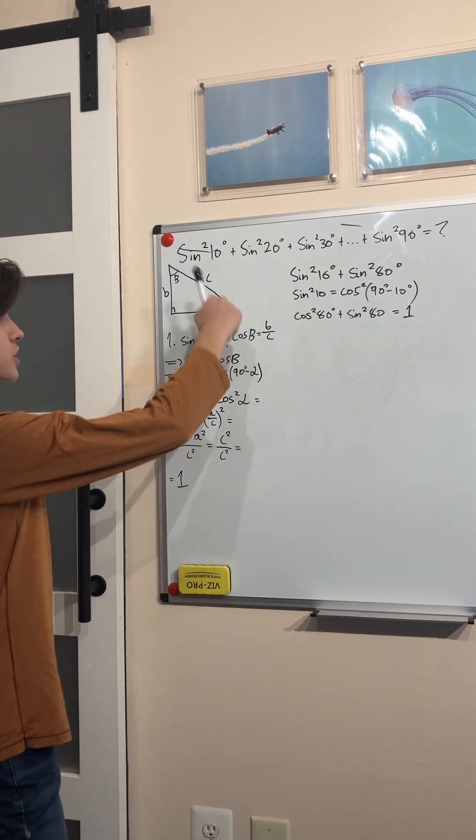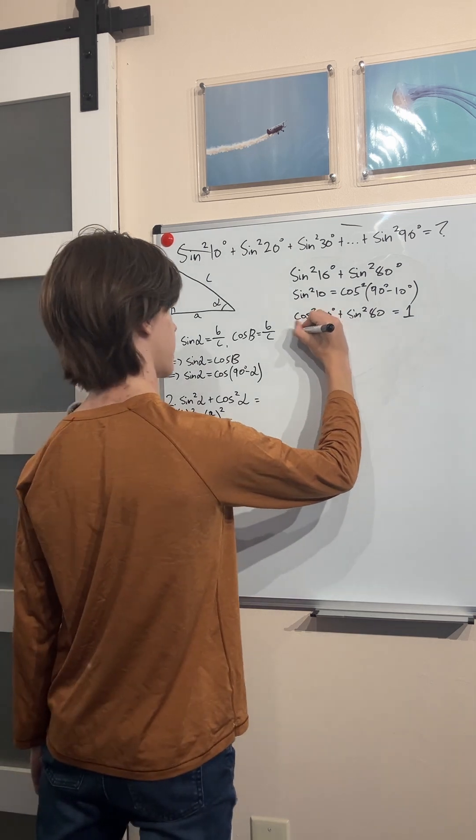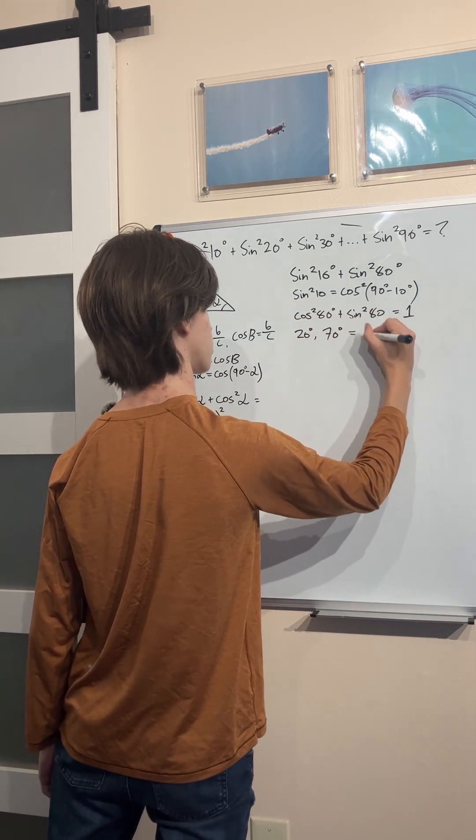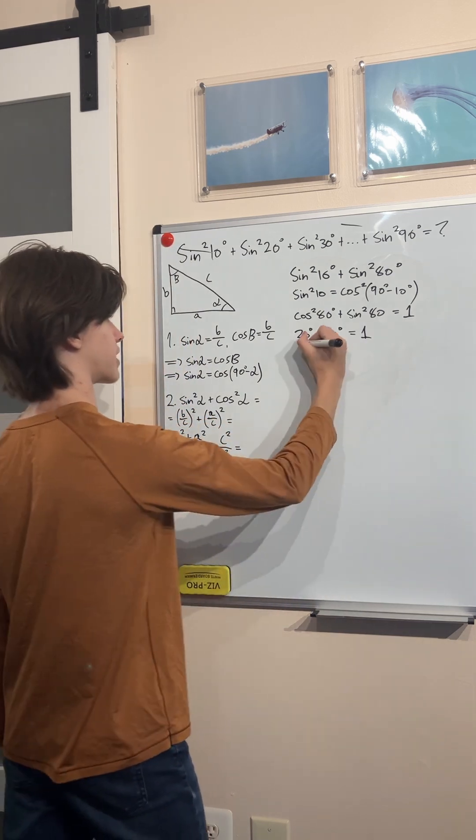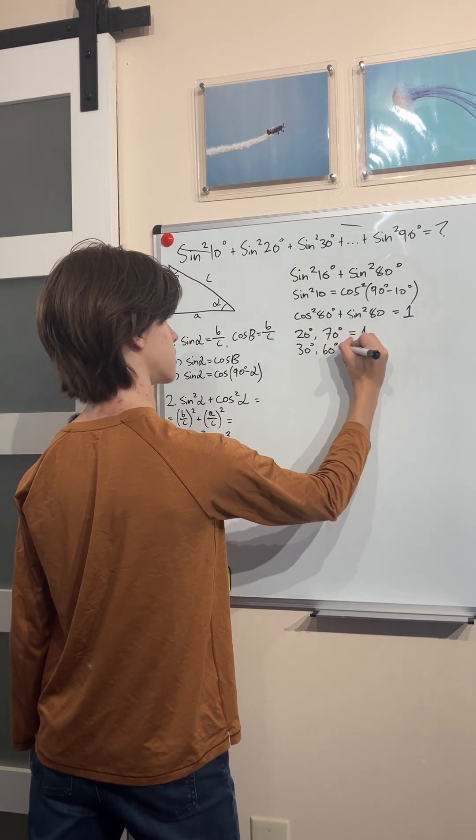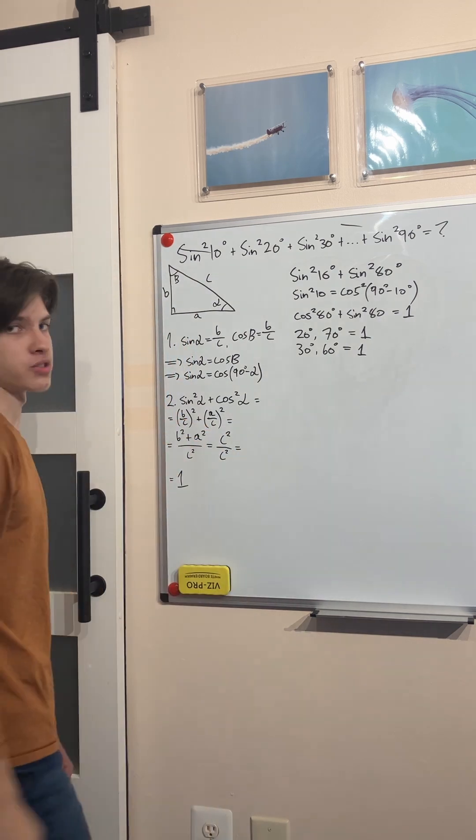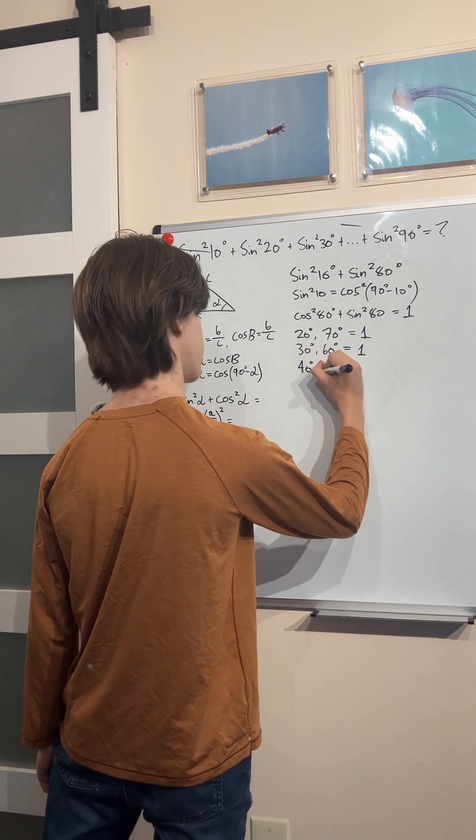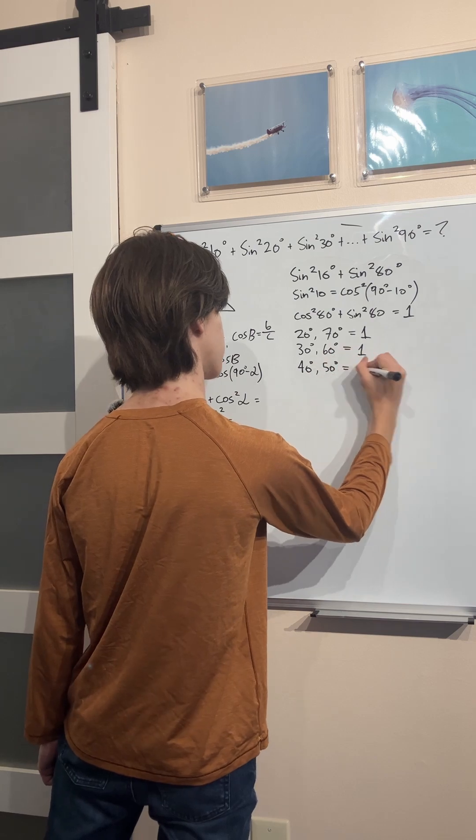And so we quickly repeat this process for all other angles. We get the angle of 20 and 70 summed is equal to one. Then we get the sum of sine of 30 and 60 degrees is equal to one. They're all complementary angles.